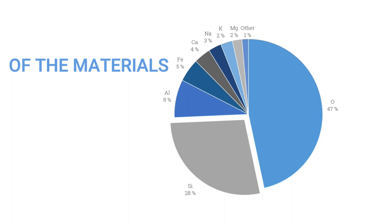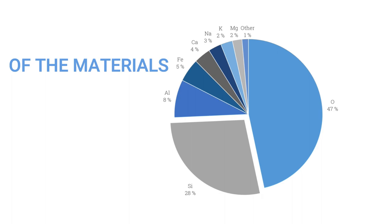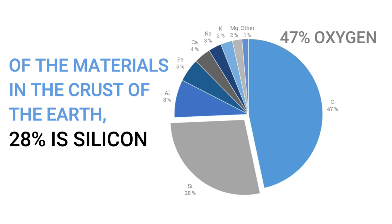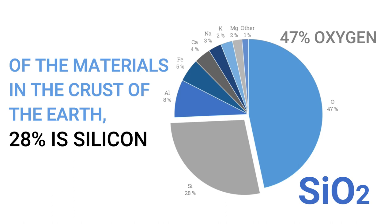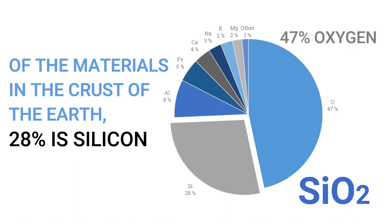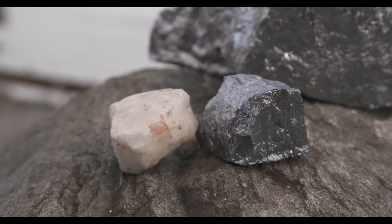The earth's crust comprises 28% silicon and 47% oxygen by weight. There is a large abundance of silicon, and the earth's crust consists mainly of oxides such as silicon dioxide. If one wants to produce elemental silicon, one needs quite pure silicon dioxide sources.